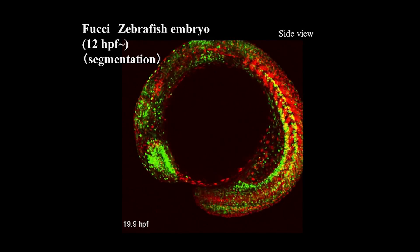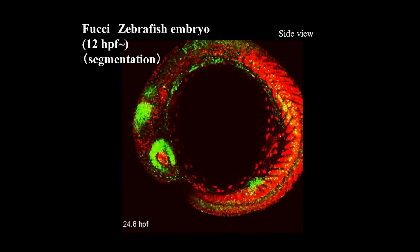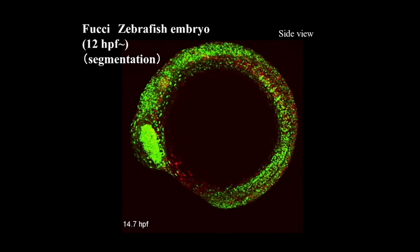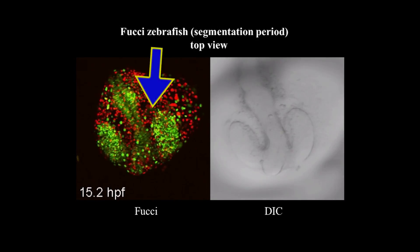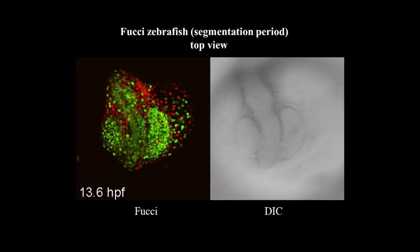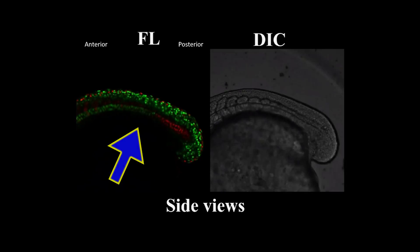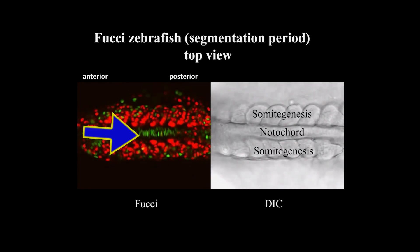When we used zebrafish embryos — very transparent ones — we could obtain cell cycle profiles in four dimensions. This is the segmentation period of the embryo, showing side views of the head and tail. With time, the green-to-red ratio decreased, but some organs like the retina and brain remained very green. In the top view, in addition to two eyes, we saw a notochord — and in the notochord, we discovered that cell cycle transitions moved from head to tail. We think cell cycle regulation in the notochord is linked to somitogenesis, which is also characterized by head-to-tail progression of differentiation.